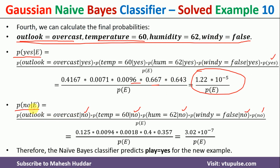Comparing the two values, 1.22×10⁻⁵ is greater than 3.02×10⁻⁷, so the new example is classified as yes. This is how you can use the Naive Bayes classifier with Gaussian distribution to classify a new example into one of the classes. If you like the video, please like and share with your friends, press the subscribe button for more videos, and press the bell icon for regular updates. Thank you for watching.